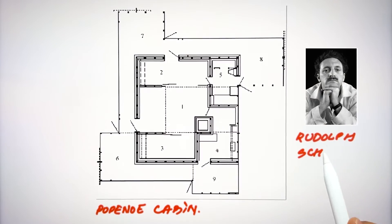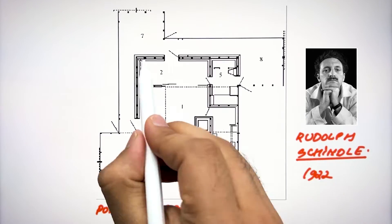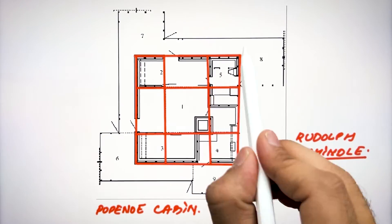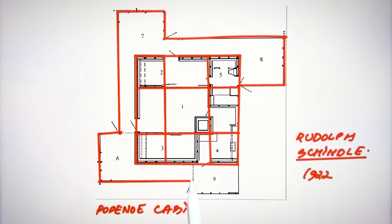This is the Poppenoy cabin by Rudolf Schindler in 1922. In this, the house is growing outward following the principle of nine grid. And he simplified the architecture by using the same concept of nine grid into this house.